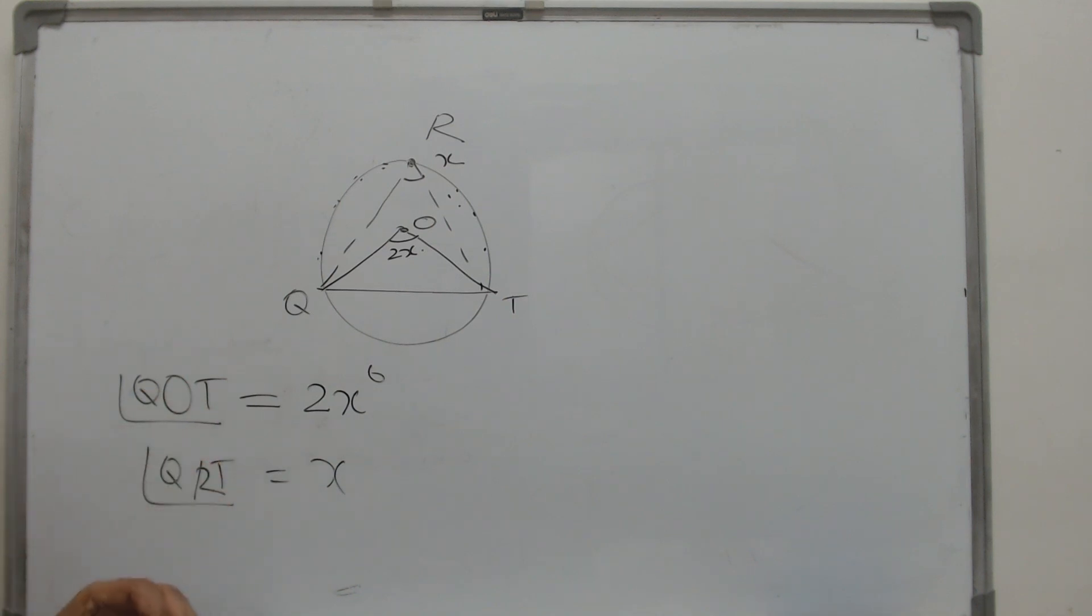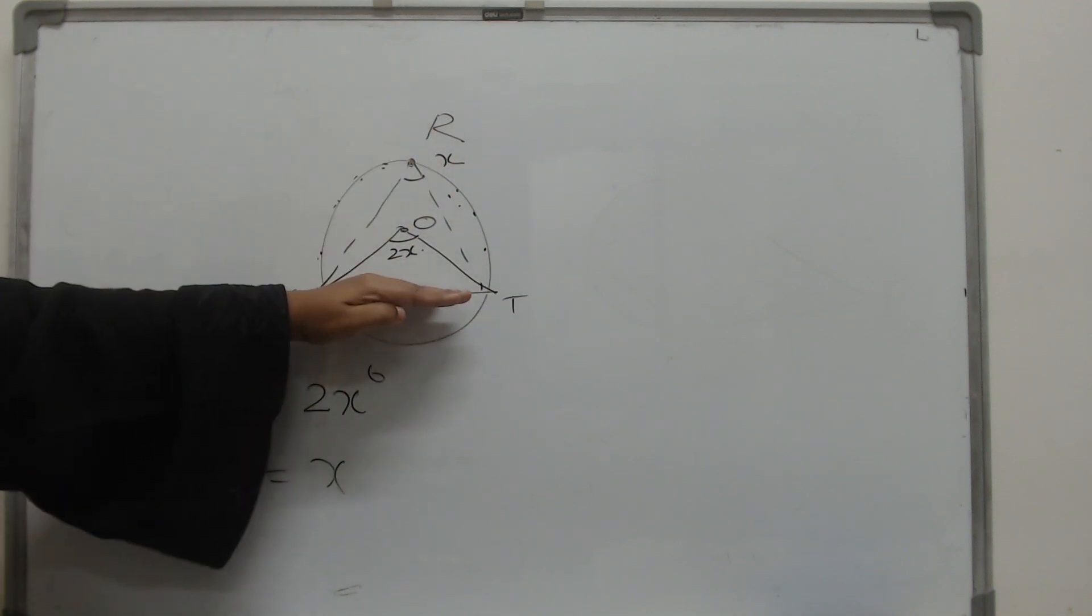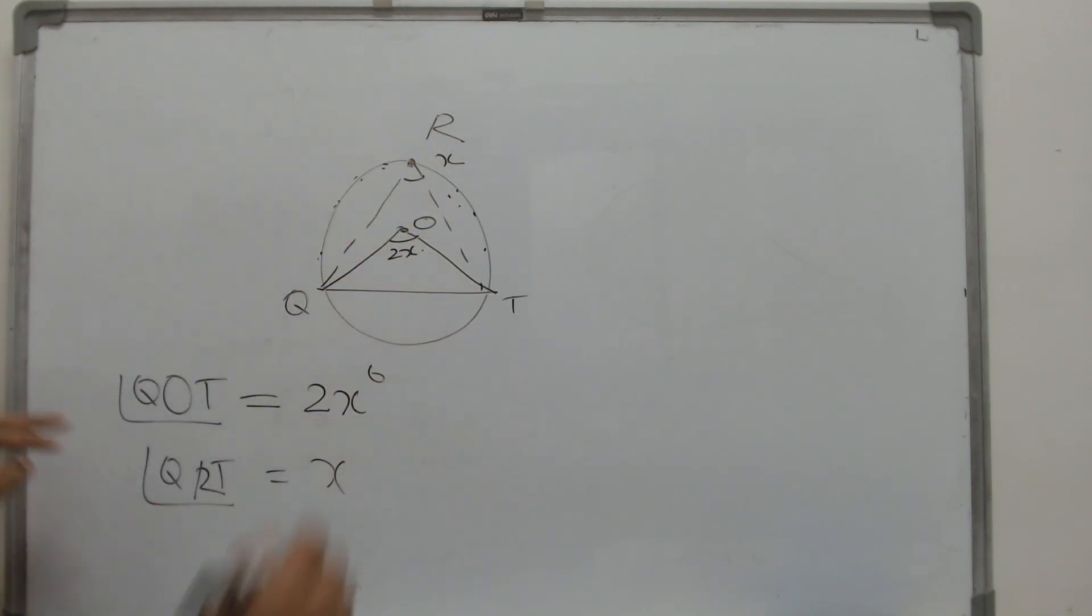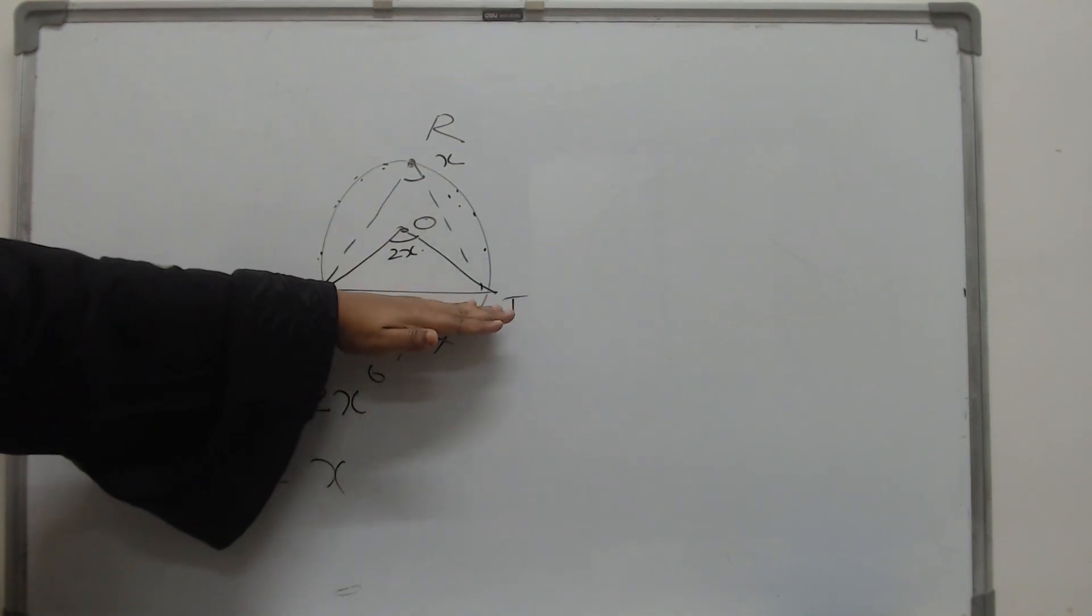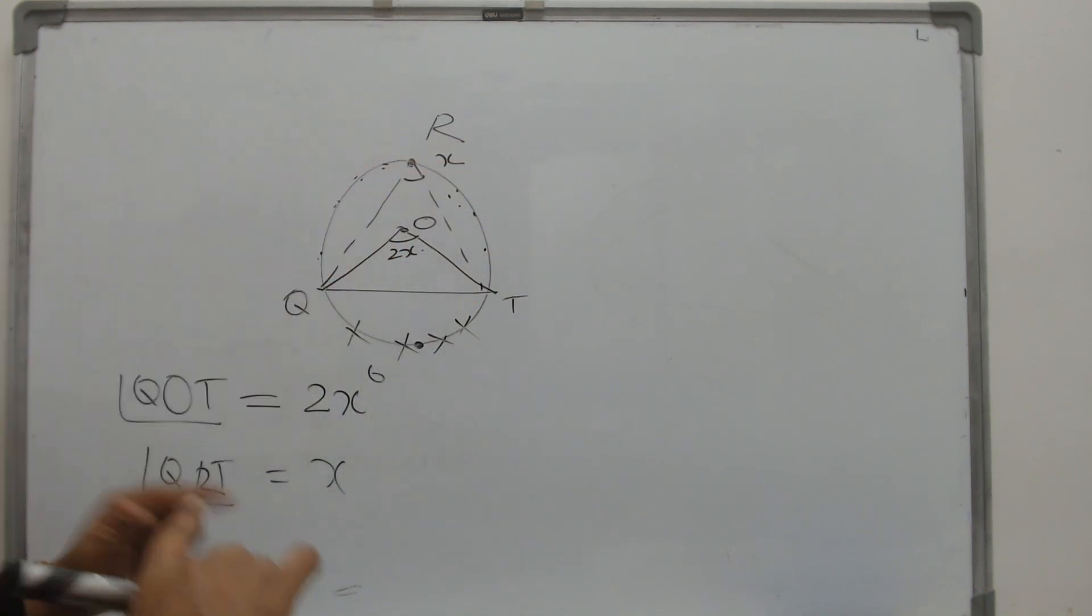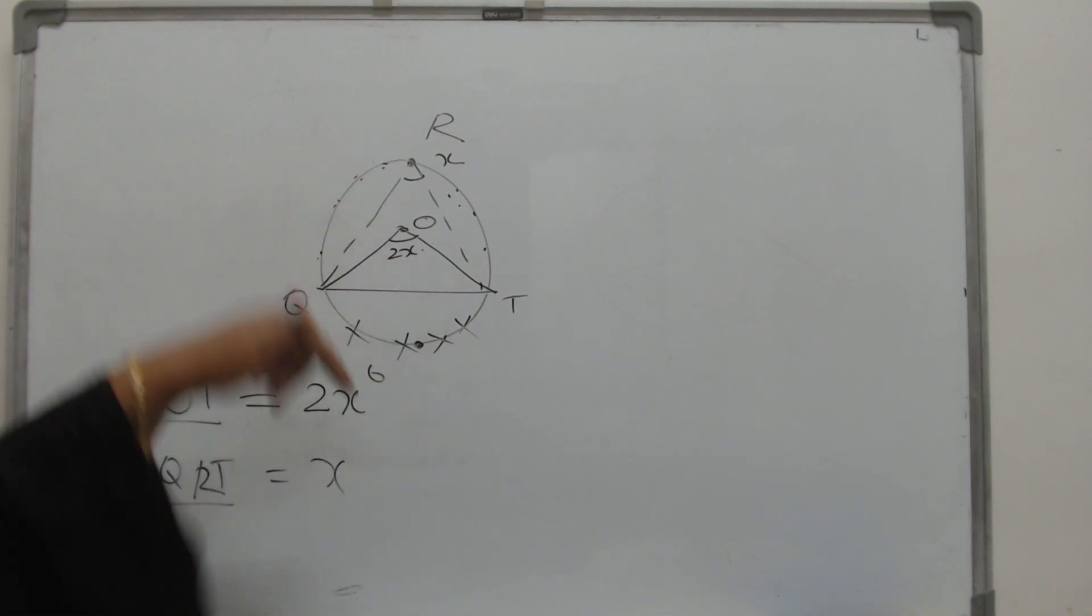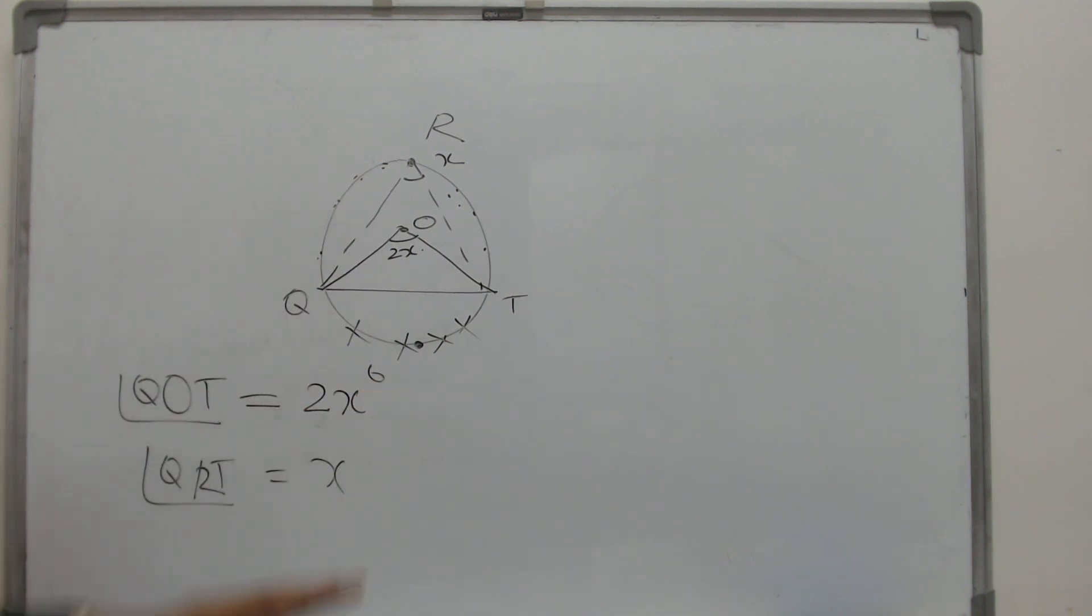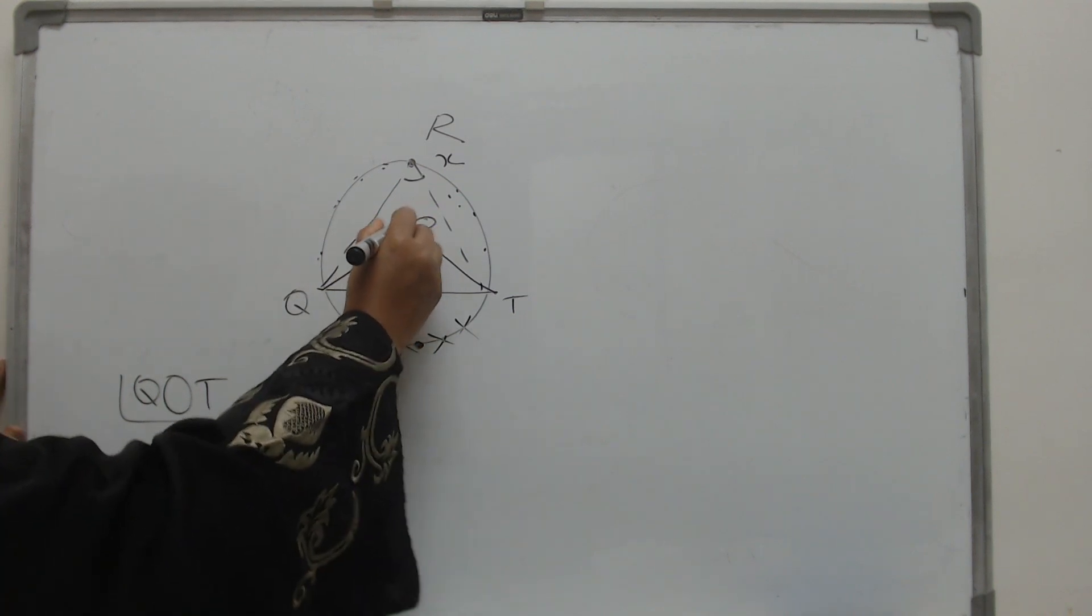But an important thing you have to remember is that that point should lie in this segment. It should not come to this side. Do not think that it extends to this side also. It only applies to this side, the side where the center is. So please notice that because I often see students making mistake in that. They just think that at any point, you can just take half of it. It is not at any point. It is at any point on the same side.